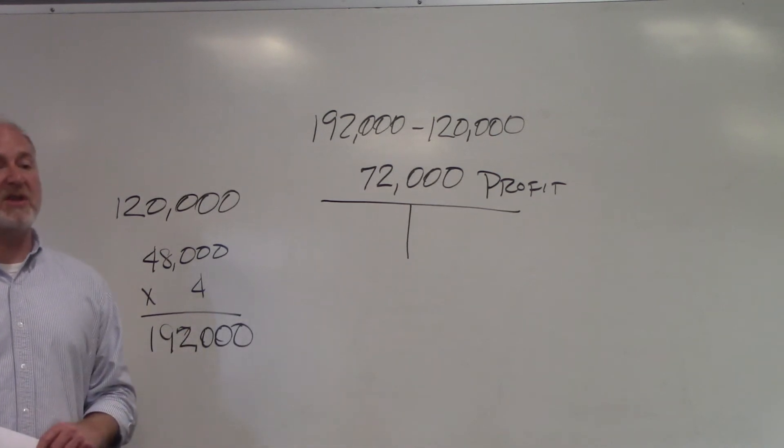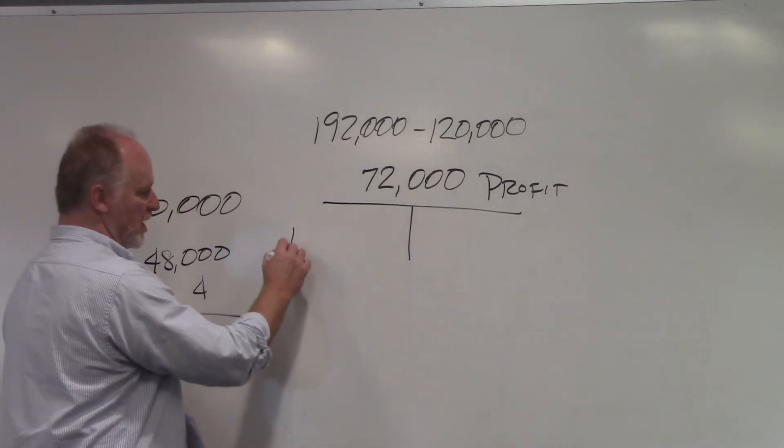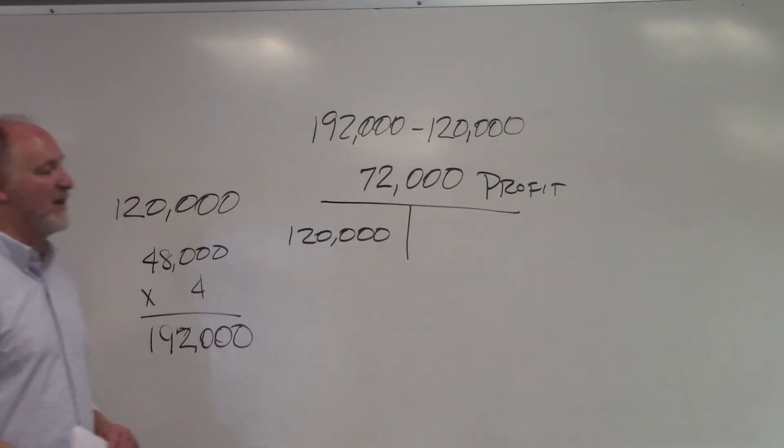Be careful, grab the right number here. What was his original investment? $120,000. So he made $72,000 off a $120,000 investment.